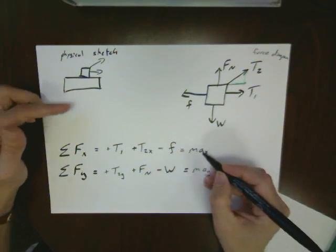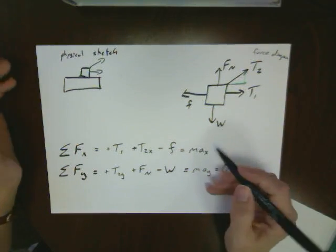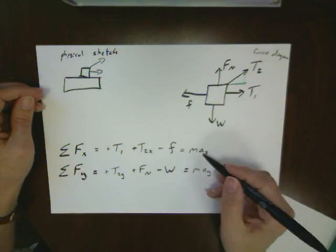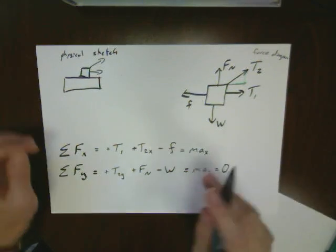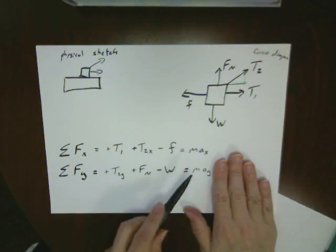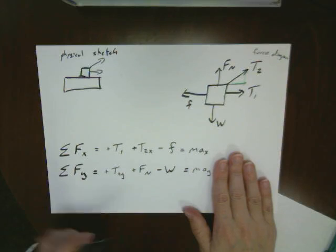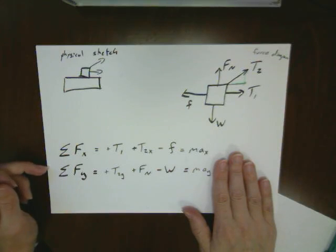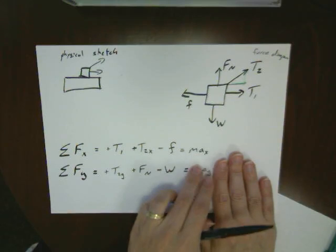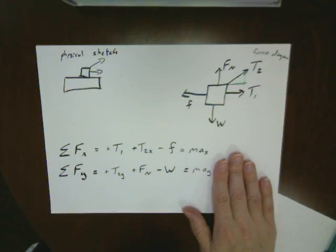m-a-x, it could be accelerating to the right, or it could be moving at constant velocity. We'd need a little more information. You're always safe putting m-a-x and m-a-y in there as long as you're keeping track and later come back to evaluate what those particular accelerations might be.